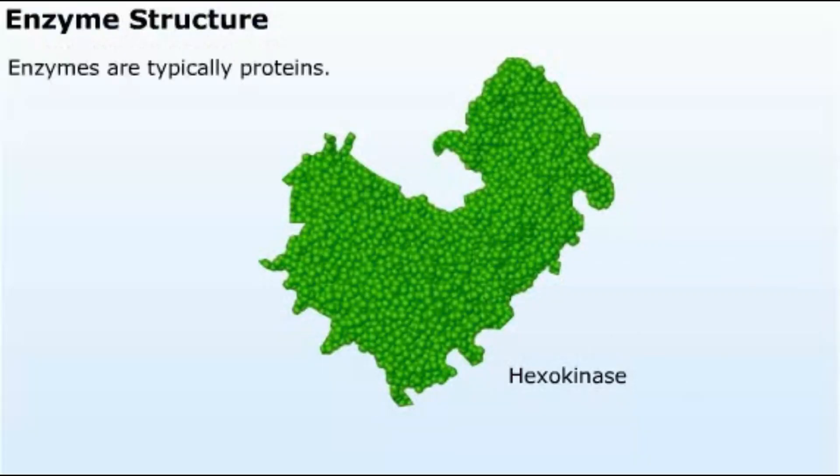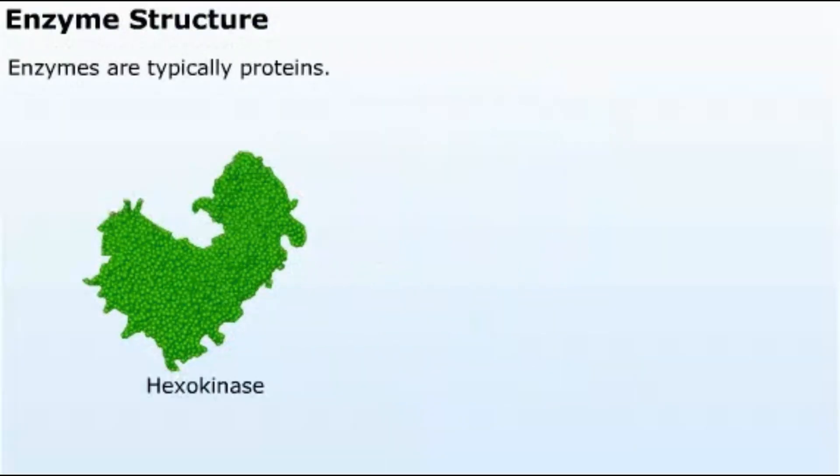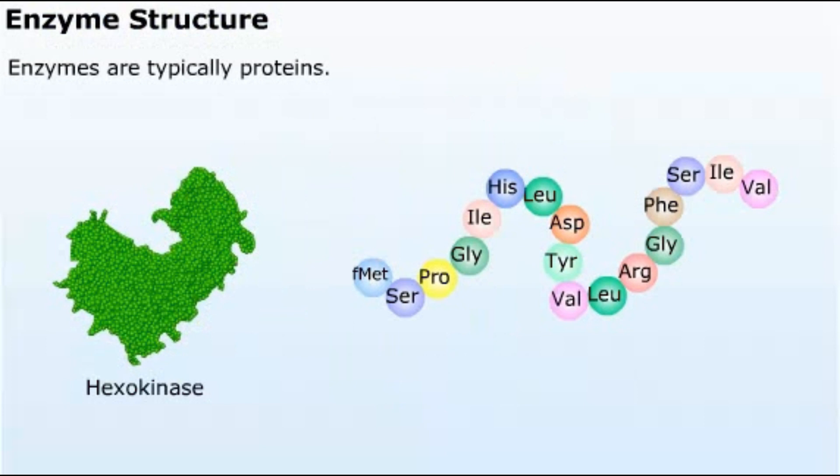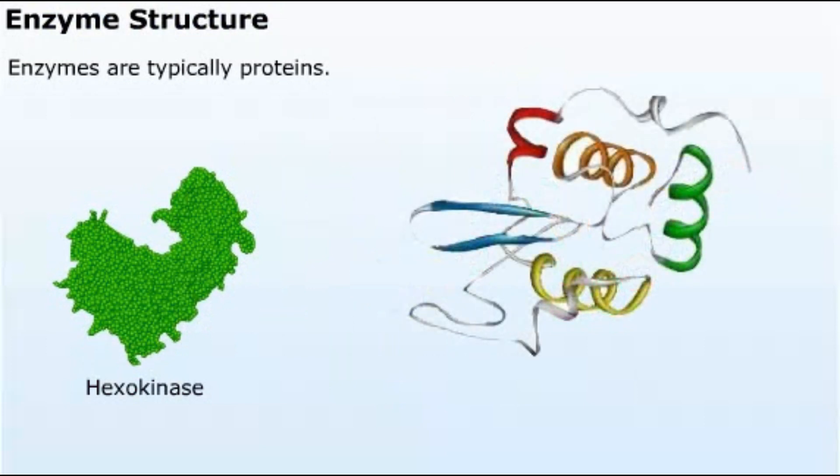What are enzymes? Most enzymes are proteins. Proteins are polypeptides made up of amino acids. The polypeptides fold into secondary structures such as alpha helices and beta sheets. These secondary structures then fold into the protein's tertiary structure.